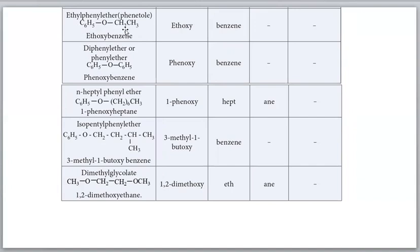For ethyl phenyl ether: ethyl is smaller, so the IUPAC name is ethoxybenzene. Note: if the alkyl group has up to six carbon atoms, no problem - the alkyl group name comes first as alkoxy. But if the alkyl group has seven or more carbon atoms, the aryl group name comes first.